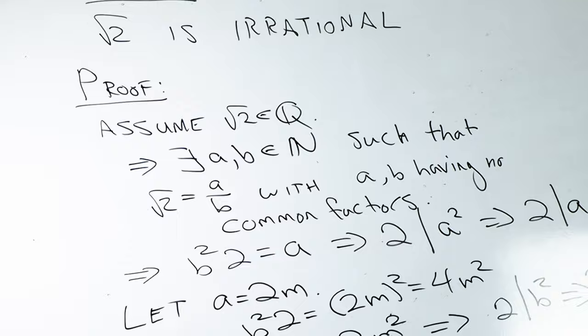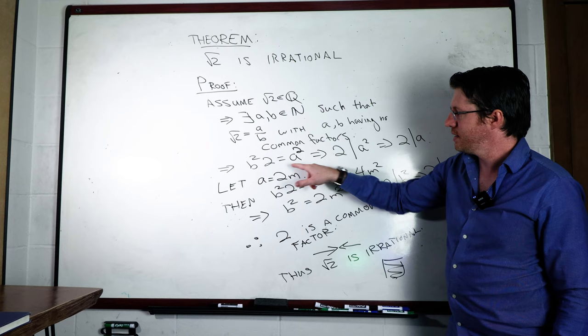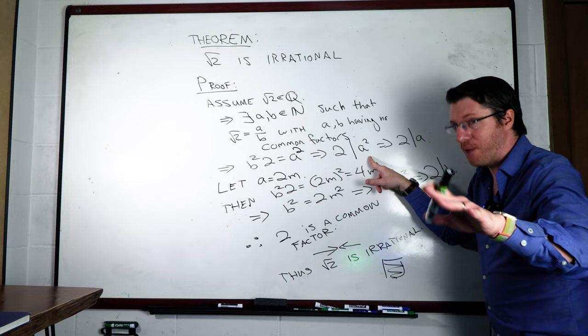Then what that means is that if we multiply b over and you square both sides, then we get 2b² = a². That means that 2 divides a squared. And since 2 is prime, and this is a unique property of primes, that means that 2 must divide a. That means that a can be written as 2 times m.